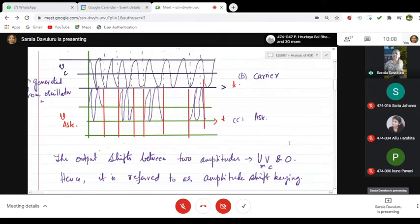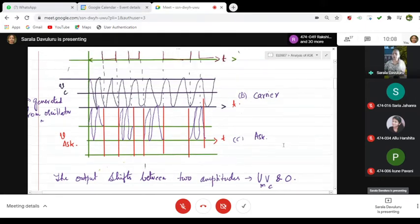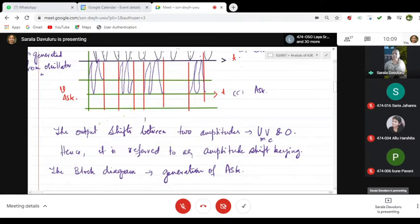Where is it shifting between? Vm into Vc that is this point and this point. Hence it is referred to as amplitude shifting. Since the output is shifting between the two amplitudes, Vm, Vc and 0 you call this as amplitude shifting.